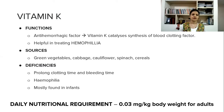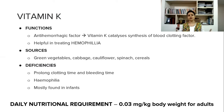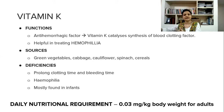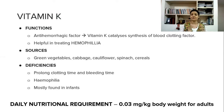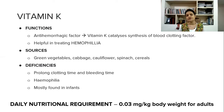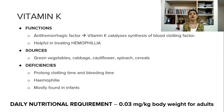Sources of vitamin K: green vegetables such as cabbage, cauliflower, and spinach are the main sources, along with cereals. Deficiency: the main deficiency is prolonged clotting time and bleeding time — clot formation takes very long, or a clot does not form at all, and profuse bleeding happens. So in hemophilia patients we give vitamin K supplements because it is very essential for them, otherwise their bleeding time and clotting time is really prolonged. The daily requirement is 0.03 mg per kg body weight for adults.